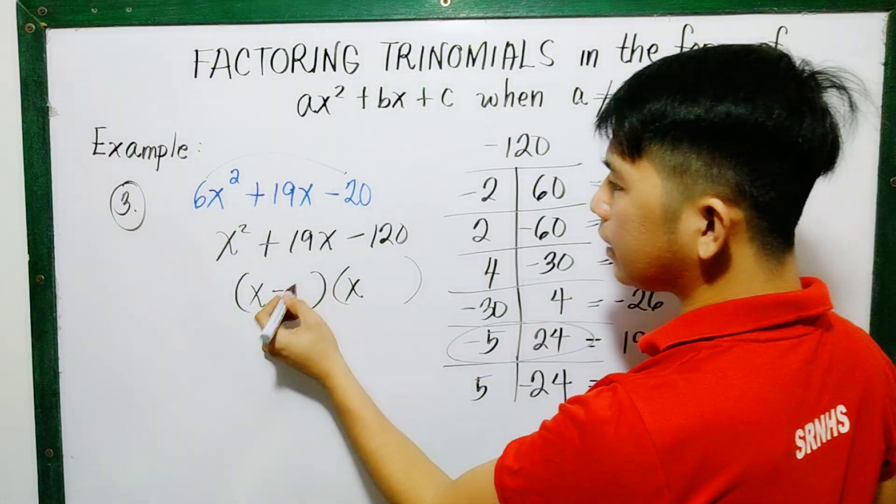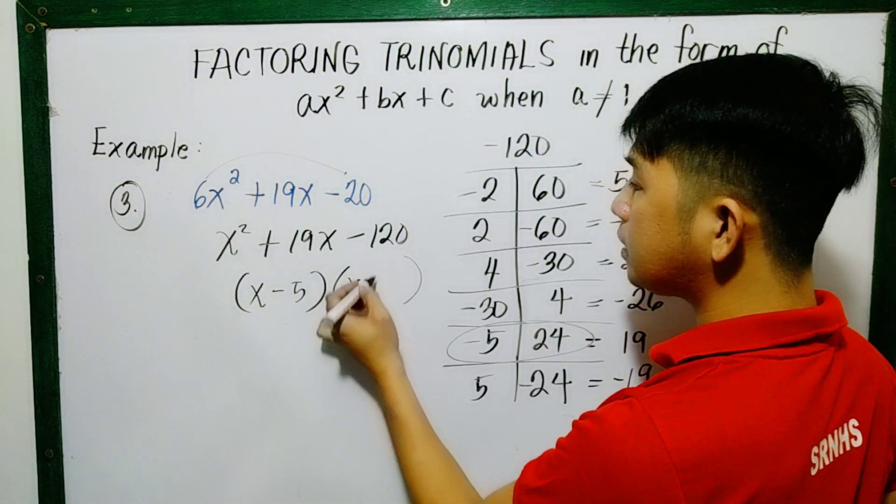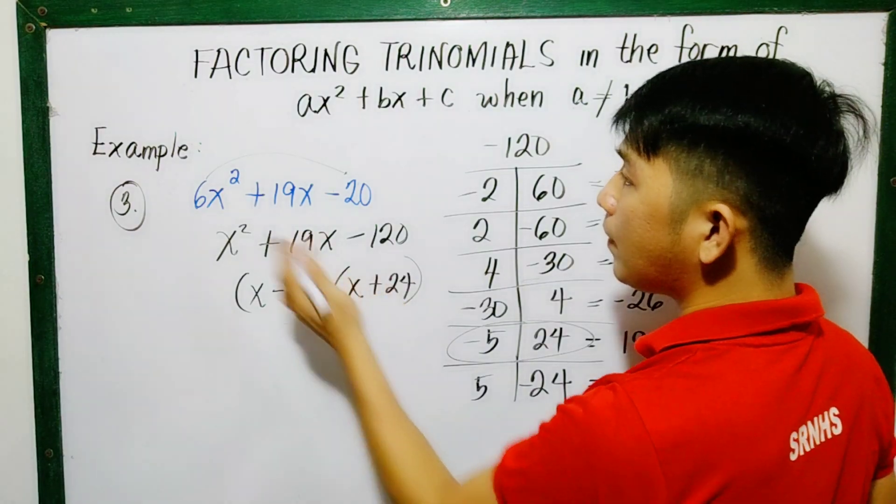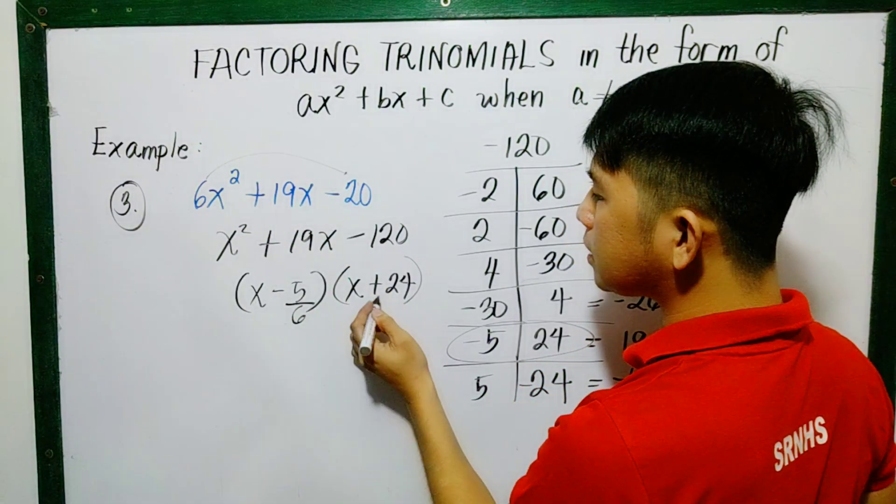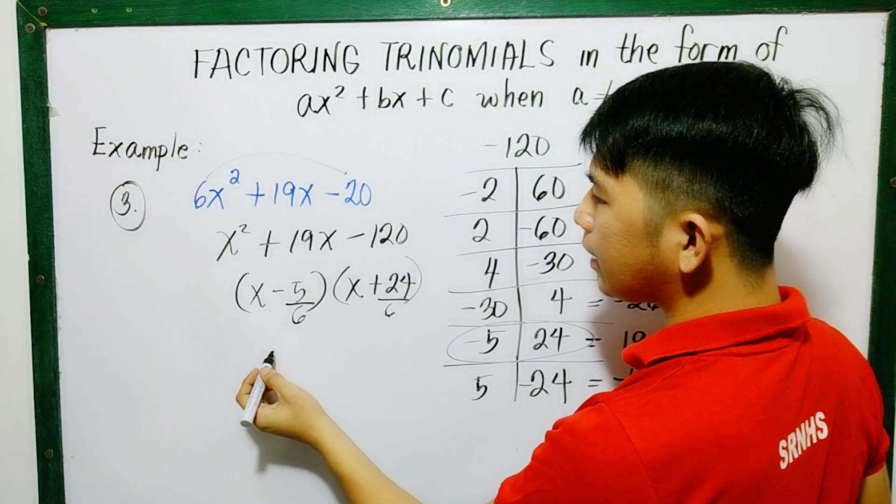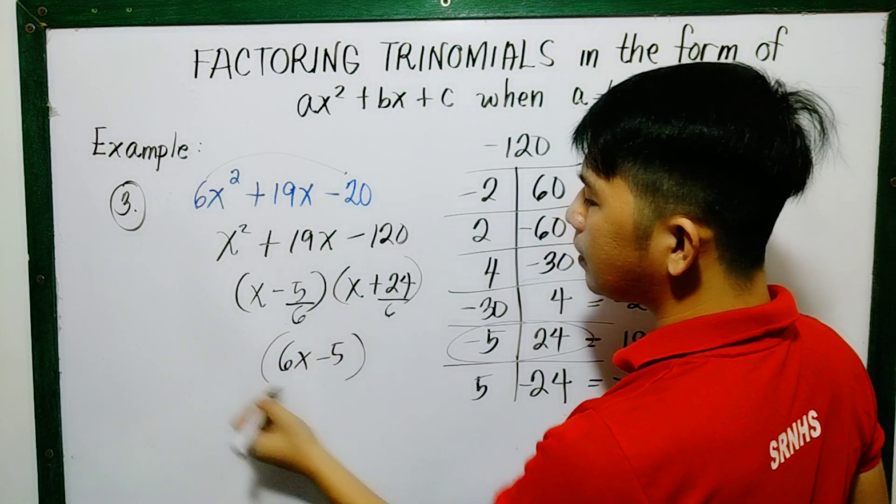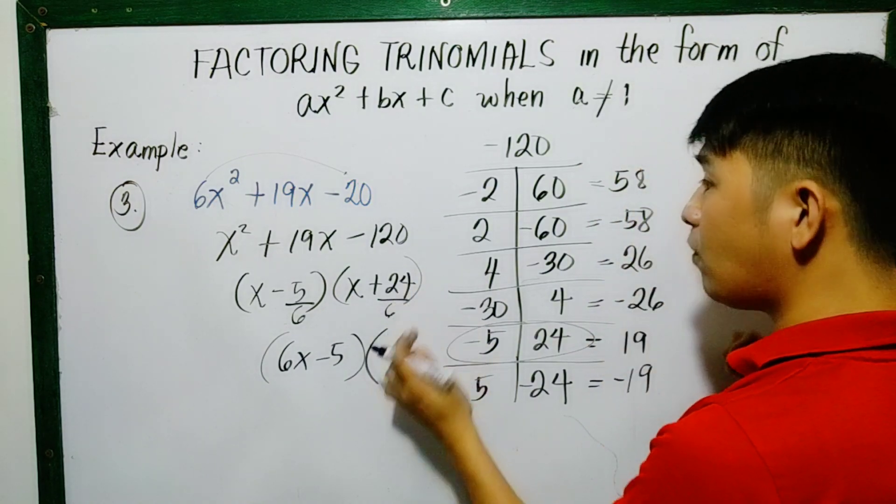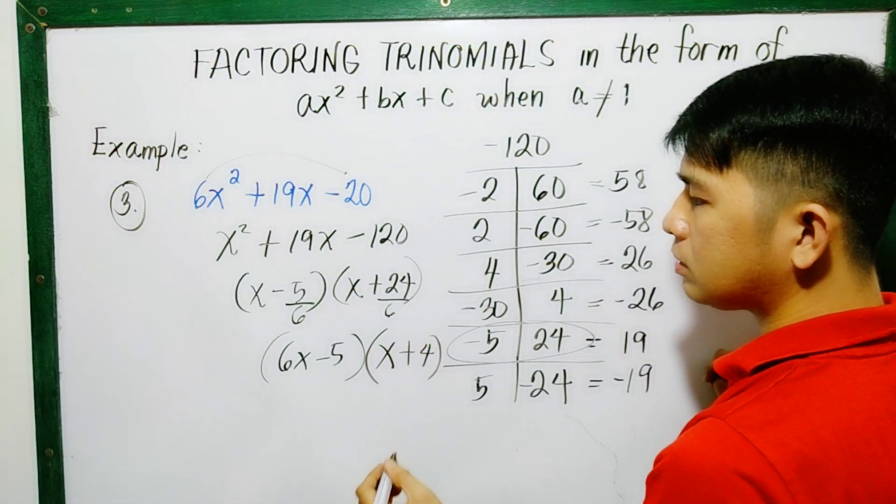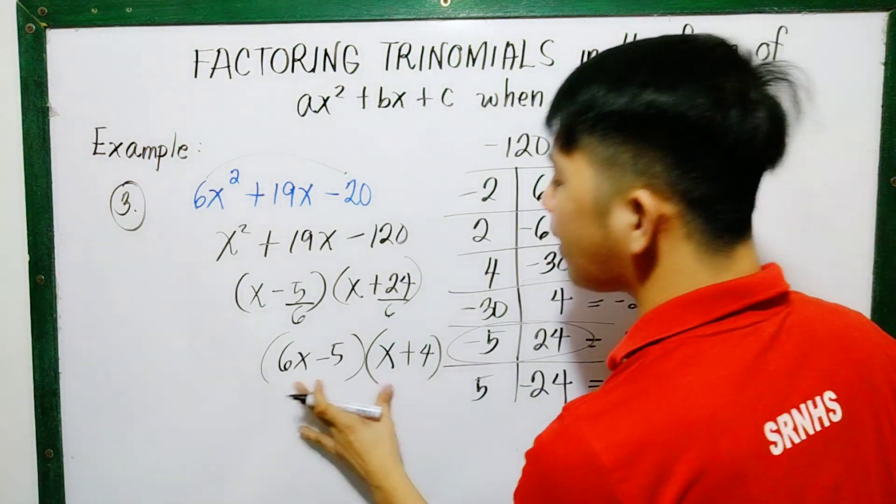We multiplied by 6, so divide this by 6. So what happens? We can reduce to lowest terms. That is 6x minus 5. The other one, this is 4. So x plus 4. That's it. So these are the factors.